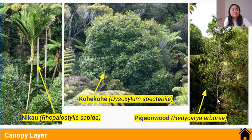The canopy layer is the layer below the emergent layer, and is the second furthest from the ground. This layer is usually sheltered by trees in the emergent layer, so they're not as fully exposed to the sun or full wind strength. Trees in this layer experience high light intensity, high temperatures, and high wind strength, but low humidity. Examples of trees found in this layer are Niko, Kohekohe, and Pigeonwood.